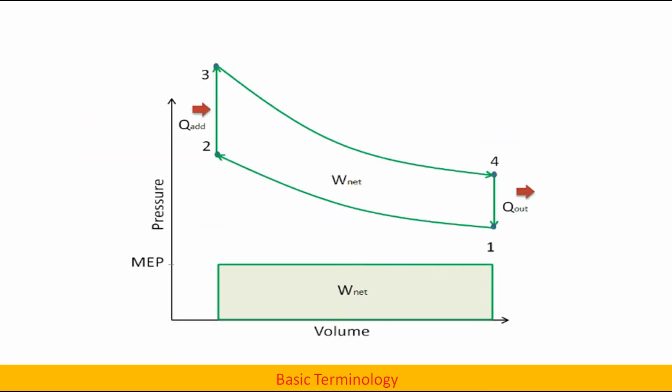This is how mean effective pressure can be used to simplify the graphs. That is, a constant pressure is assumed to act upon the system which does the same work as varying pressure cycle. Assuming all other conditions remaining same, that is swept volume, clearance volume, compression ratio, etc.